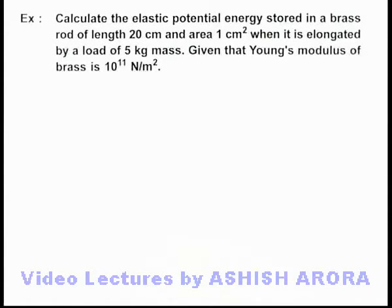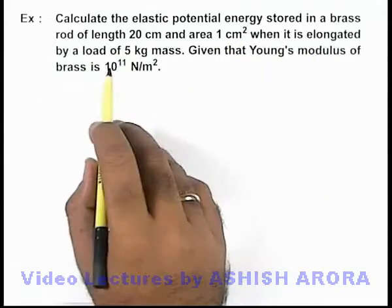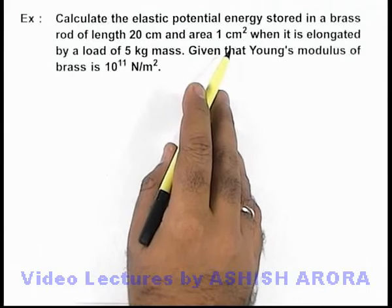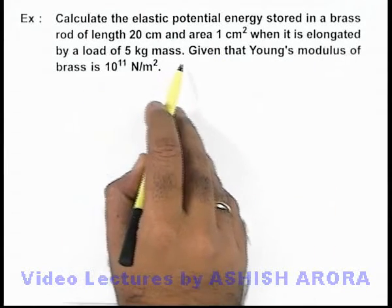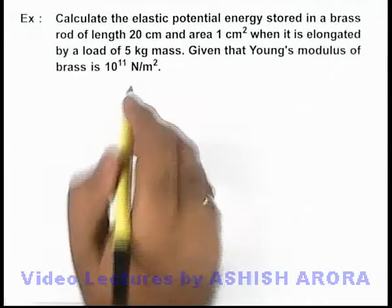In this example, we are required to calculate the elastic potential energy stored in a brass rod of length 20 centimeters and area 1 centimeter square when it is elongated by a load of 5 kilogram mass. We are also given that Young's modulus of the brass is 10 to power 11 newton per meter square.